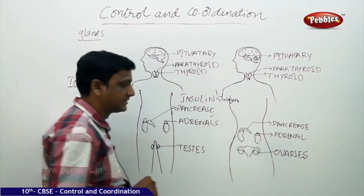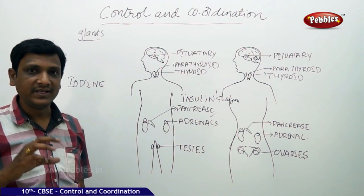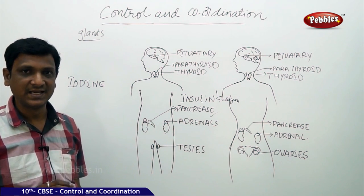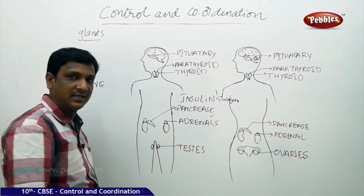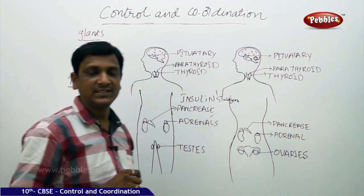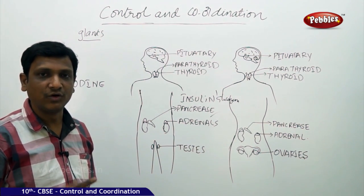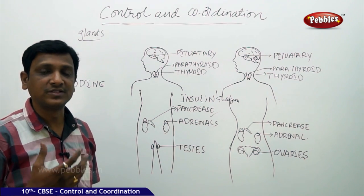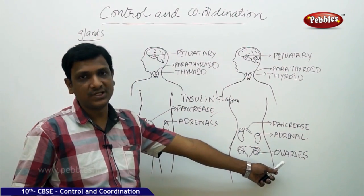Reproductive hormones and glands are different in males and females. In males, the reproductive hormone is testosterone, which helps produce secondary sexual characters and male sex cells, and supports male body development and production of reproductive cells — secreted by the testes. In females, the ovaries secrete two hormones: estrogen, which helps in the development of secondary sexual characters and reproductive organs, and progesterone, which helps during pregnancy, lactation, and delivery.